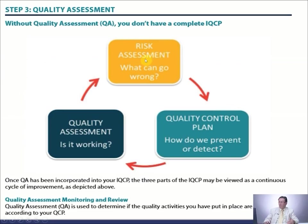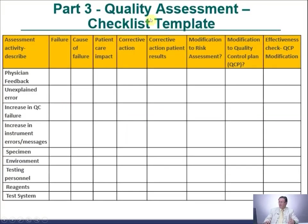These are the three elements of an IQCP: risk assessment, quality control plan, and quality assessment. Risk assessment addresses what can go wrong; the quality control plan addresses how do we prevent or detect these things that could go wrong; and the quality assessment tells us if the actions are correct, or if the plan is working or not. There is also a quality assessment checklist template you can implement in your laboratory.